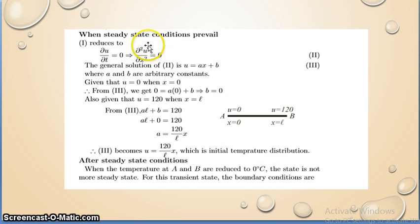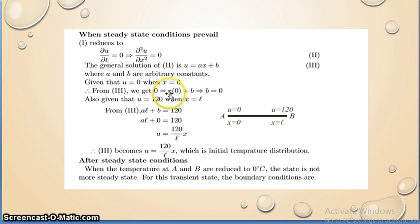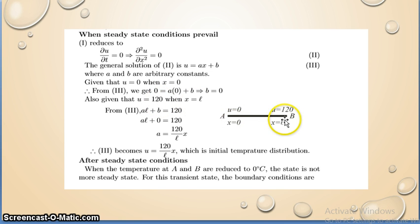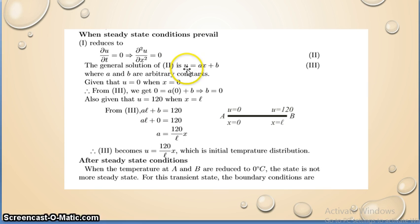First, find the steady state conditions: ∂u/∂t = 0, so the second derivative is zero, giving u = Ax + B. Applying boundary conditions: u = 0 at x = 0 gives B = 0. u = 120 at x = L gives AL + B = 120, so AL = 120, therefore A = 120/L. Substituting A and B, we get u(x) = 120x/L. This is the steady state temperature distribution.